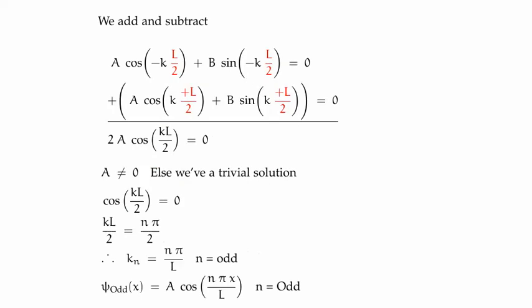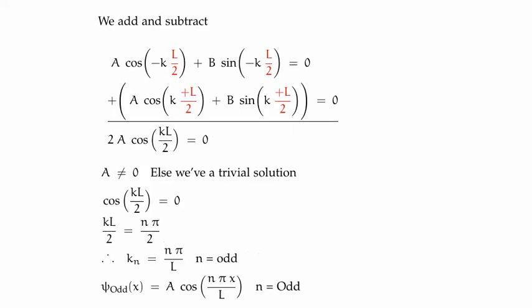If we add the expressions, we get that 2A times the cosine of kL over 2 equals zero. If we don't want the trivial solution — where the wave function is zero everywhere — we must set A to be non-zero, which means the cosine of kL over 2 must be zero. We know cosine is zero at n pi over 2 where n is an odd number, and this means our wave number is given by n pi over L.